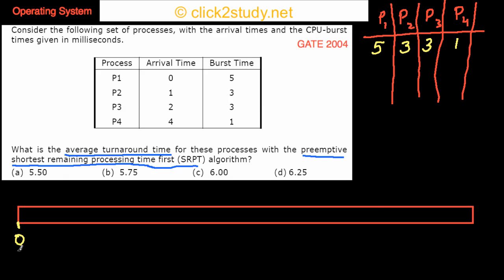I'm going to mark these arrival times. So this is 0 and process P1 comes, P1 arrives at this time. Out here it is 1 and process P2 arrives out here. And out here it is 2, and then process P3 arrives here. And then there is 3 and then there is 4, and process P4 arrives at this time 4.